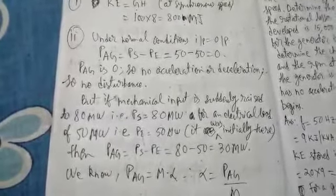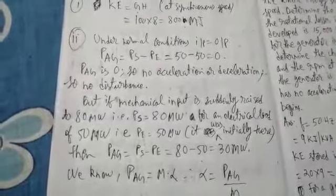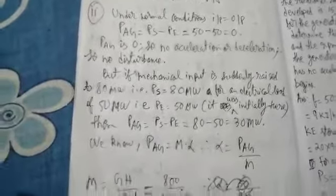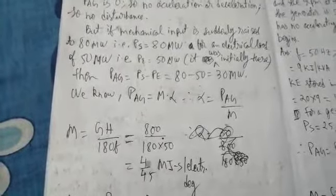So Ps minus Pe: 80 minus 50 is 30 megawatts. So PAg is plus 30 megawatts. Whenever PAg is positive, it means it will be defined as an accelerating force.